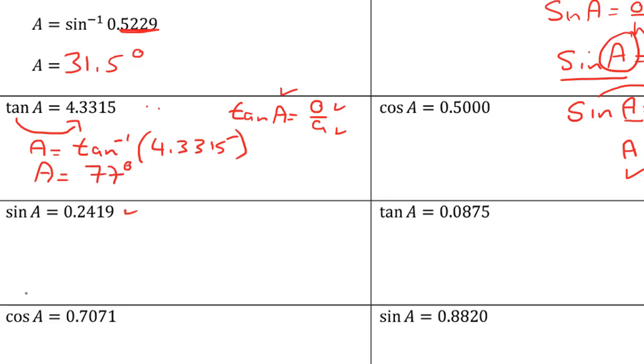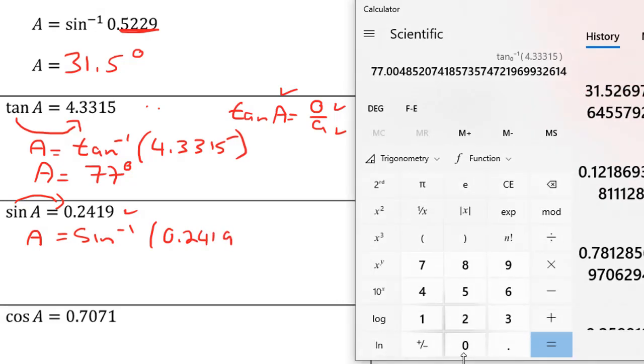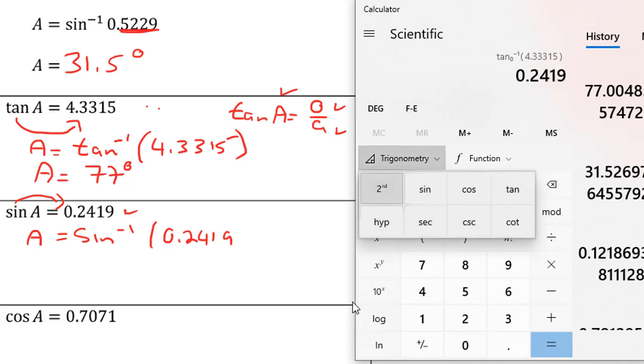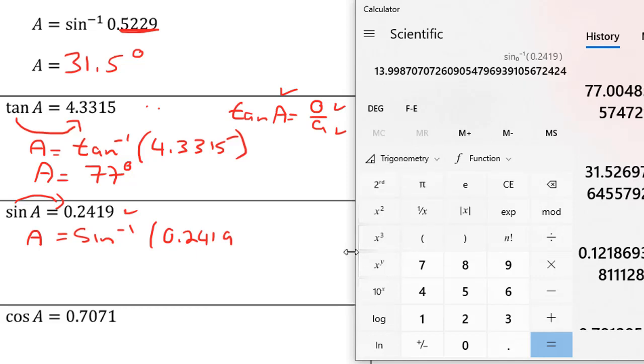Let's take a look at this one. We're going to rewrite this: sine inverse of 0.2419. Because we're using a Windows calculator, we have to key in the ratio first, 0.2419. Click on our trig drop-down, second function, and then sine. We end up getting 13.998. When we round this, it's 14 degrees.